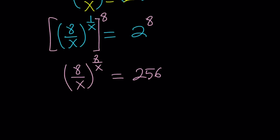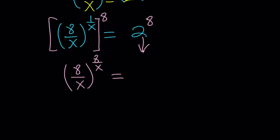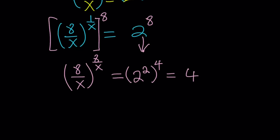Now on the left-hand side I have something like something to the power of the same thing, and I want the same structure on the right-hand side. Can 256 be written as something to the power of itself? If we consider 2 to the power of 8, let's write it as 2 squared to the 4th power, because 2 times 4 equals 8. So 2 to the 2nd power is 4, and this becomes 4 to the power of 4.